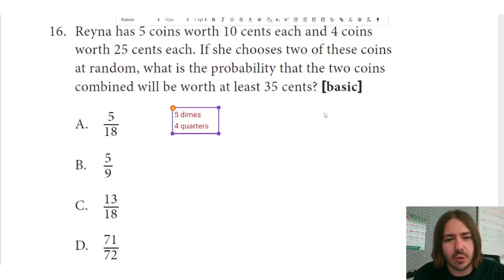Okay, the dimes are worth 10 cents and the quarters are worth 25 cents. If she chooses two of the coins at random, what is the probability that the two coins combined will be worth at least 35 cents? So as far as what could possibly happen if you're just randomly picking two coins, they can either be two dimes, two quarters, or one of each.